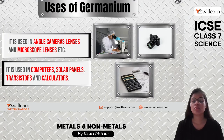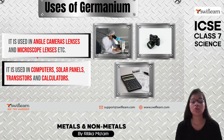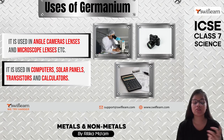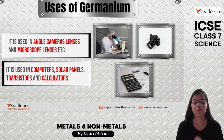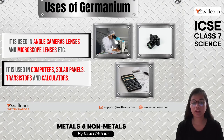Germanium is used in camera lenses and microscopic lenses. It is also used in calculators, transistors, solar panels, and computers. Germanium is very important in the semiconductor industry.